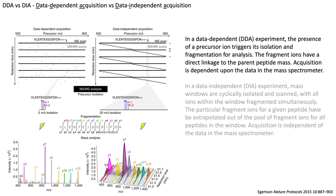In mass spectrometry there are generally two ways that we go about performing an experiment to do large global analyses, and these are either termed DDA or DIA — with DDA representing data-dependent acquisition and DIA data-independent acquisition. In a data-dependent experiment, the presence of a precursor ion triggers its isolation and fragmentation for analysis. Fragment ions have a direct linkage to the parent peptide mass, and acquisition is dependent upon the data in the mass spectrometer, hence the name data-dependent.